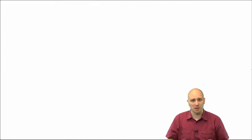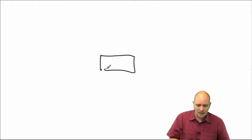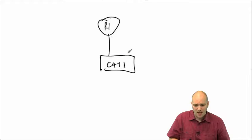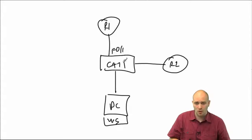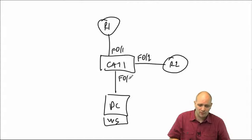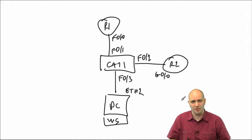I'm going to go to my terminal and build a relatively simple network. I will have a single switch - cat1 - and three devices connected to it: R1, R2, and a PC running Wireshark. R1 is connected to Fast Ethernet 0/1 on cat1, R2 is connected to Fast Ethernet 0/2, and the PC is connected to Fast Ethernet 0/3. Let me quickly put in the ports so we have a full reference.